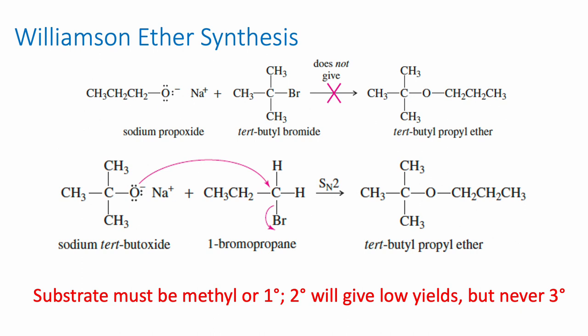The arrangement on top does not work — that's an E2 mechanism — but if we swap the oxygen and the bromine as shown below, we do get a substitution product and can make that ether. We just have to make sure our nucleophile and electrophile are appropriately selected. The substrate must be methyl or primary; secondary will compete with E2; tertiary will give only E2. We always have a choice of which half is the nucleophile and which is the electrophile, and we must always choose lower substitution for the electrophile.